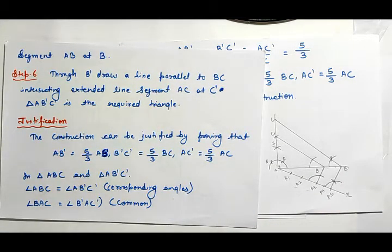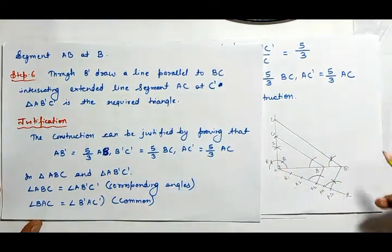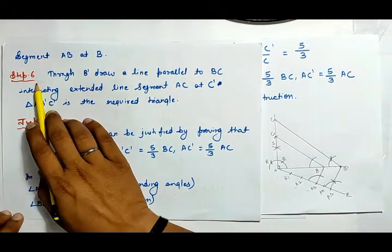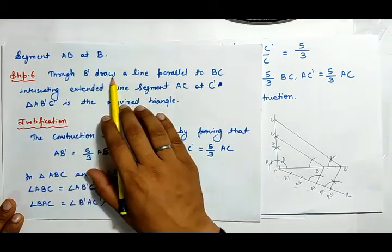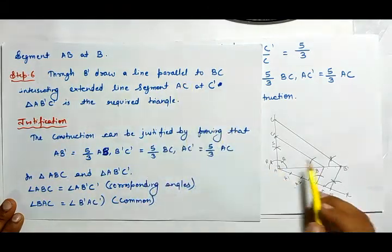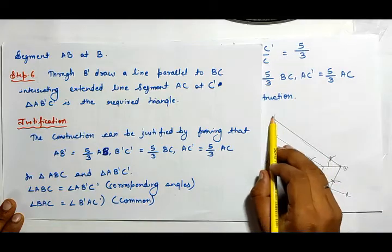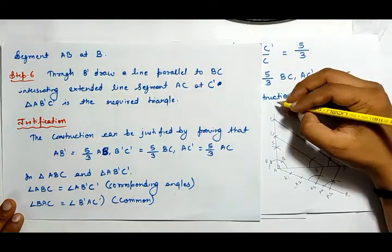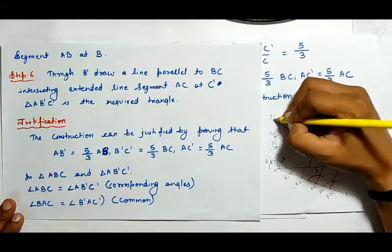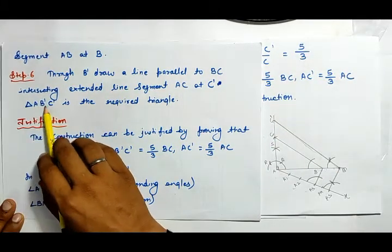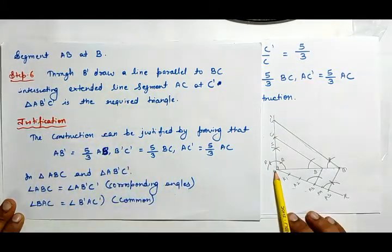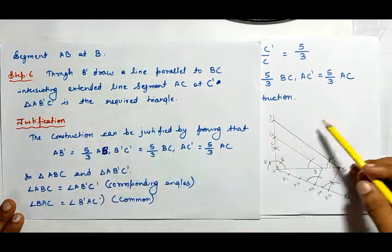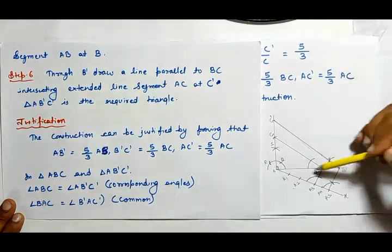This line intersects the extended segment AB at B dash. Step 6: through B dash, draw a line parallel to BC intersecting the extended line at C dash. Triangle AB dash C dash is the required triangle.